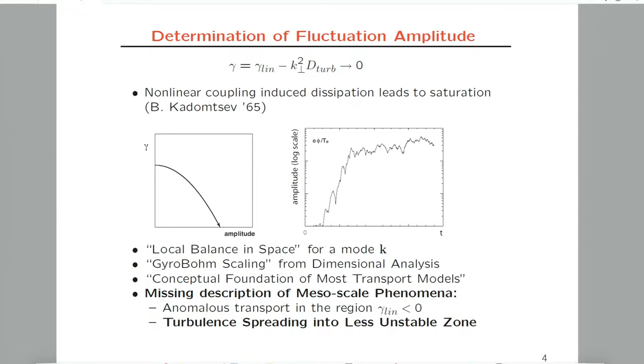Eventually it saturates. If you measure the growth rate, it will go down to zero, and this determines the fluctuation amplitude at nonlinear saturation. This can be schematically written as the effective growth rate equals the linear growth rate minus the nonlinear damping term, which goes like k perpendicular squared times turbulent diffusivity due to nonlinear interaction.